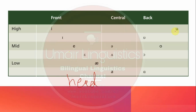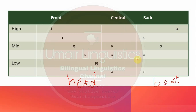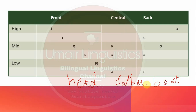The vowel in 'boot' shows the tongue still at a high position but moving backward in the mouth — so it is a high back vowel. But for the vowel in 'father', you will notice that your lower jaw goes down significantly, your tongue moves toward the lower teeth, and it also moves backward — so it is a low back vowel.